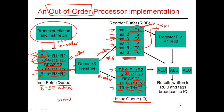Every cycle, the issue queue is going to look at every single entry — not just the first instruction — and see if that instruction has both of its input operands available. R1 and R2 are always available because if a value is sitting in R1, the instruction that produced that result has already committed, meaning it's definitely finished and the value has been written into R1. It is only the temporary registers that are unknown, because those correspond to instructions currently working in the pipeline that may not yet have produced a result.